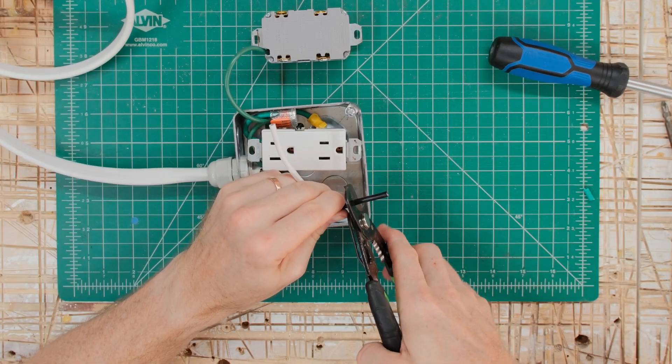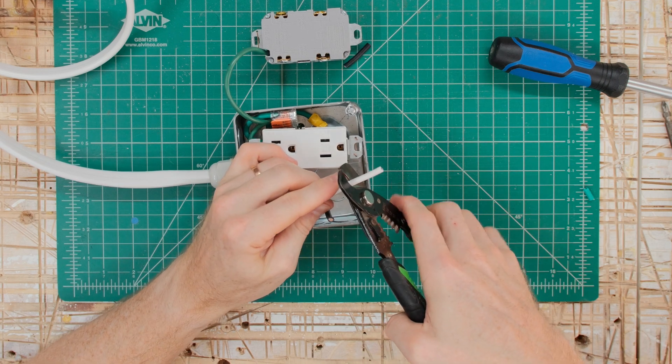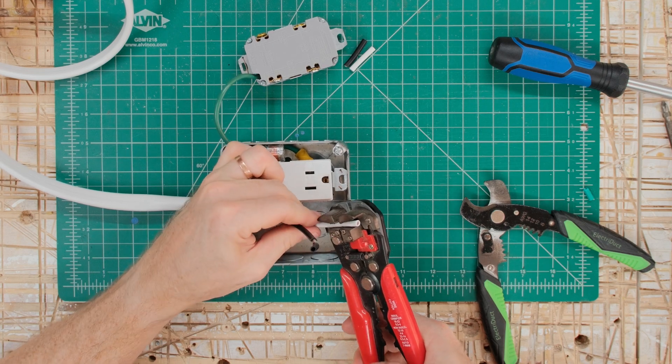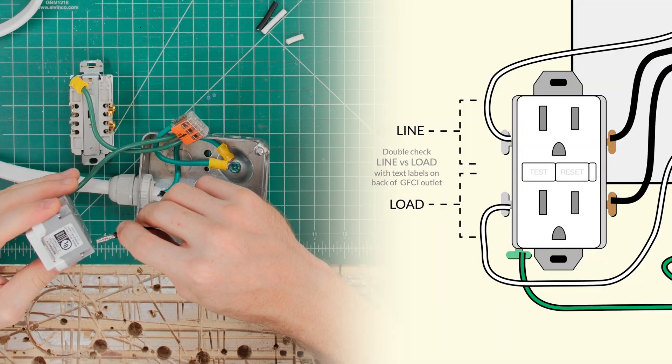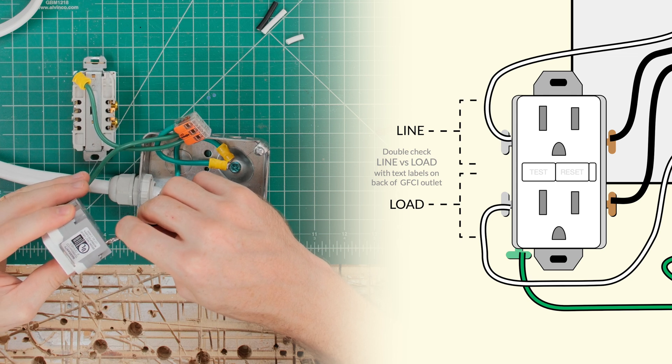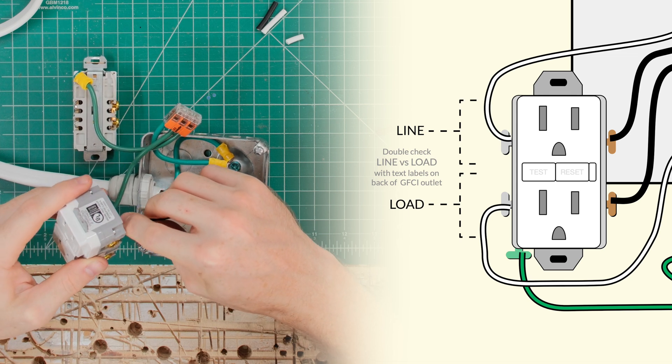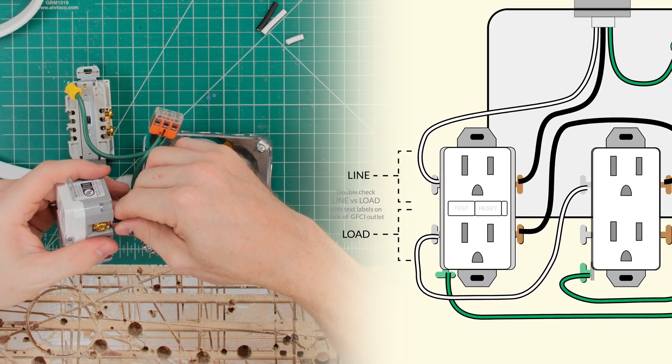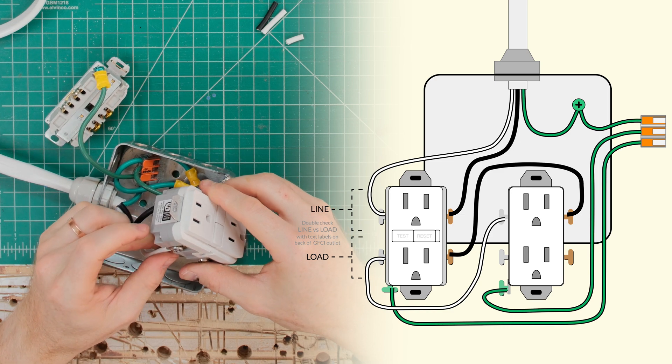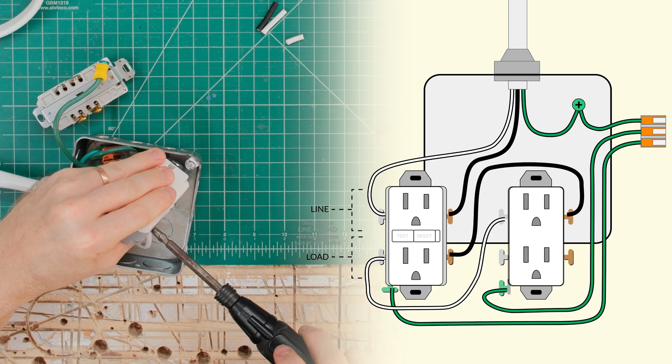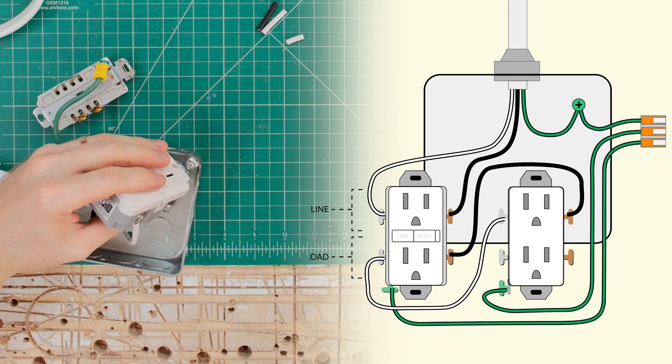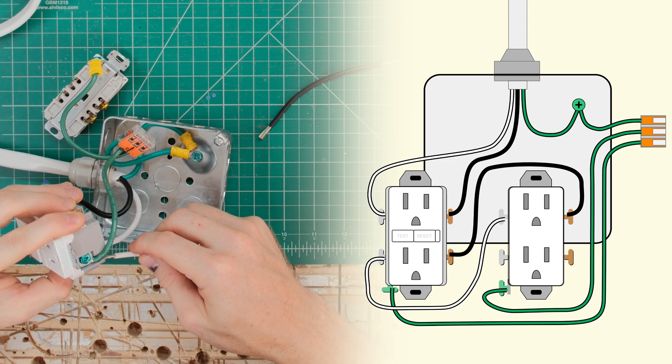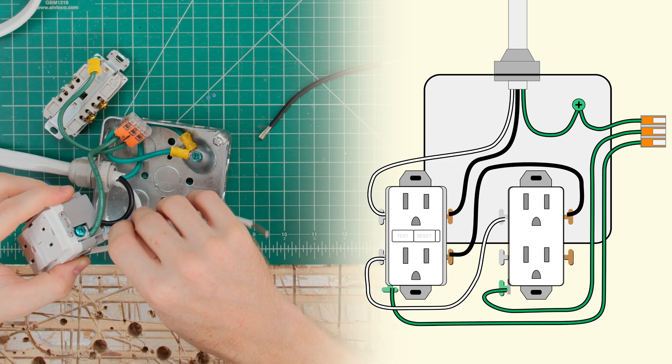Next up I'll connect the hot and neutral wire from the main cable coming into the box to the line side inputs of the GFCI outlet. The GFCI outlet has one set of connections labeled as line and a second set labeled as load. In order for the GFCI protection to work properly and protect the second outlet, you must connect the line versus load correctly. The line side connects to the power source, or the power coming into the box, and the load side connects to the second outlet. The black wire, which is the hot wire, connects to the brass colored screw, and the white neutral wire connects to the silver screw.